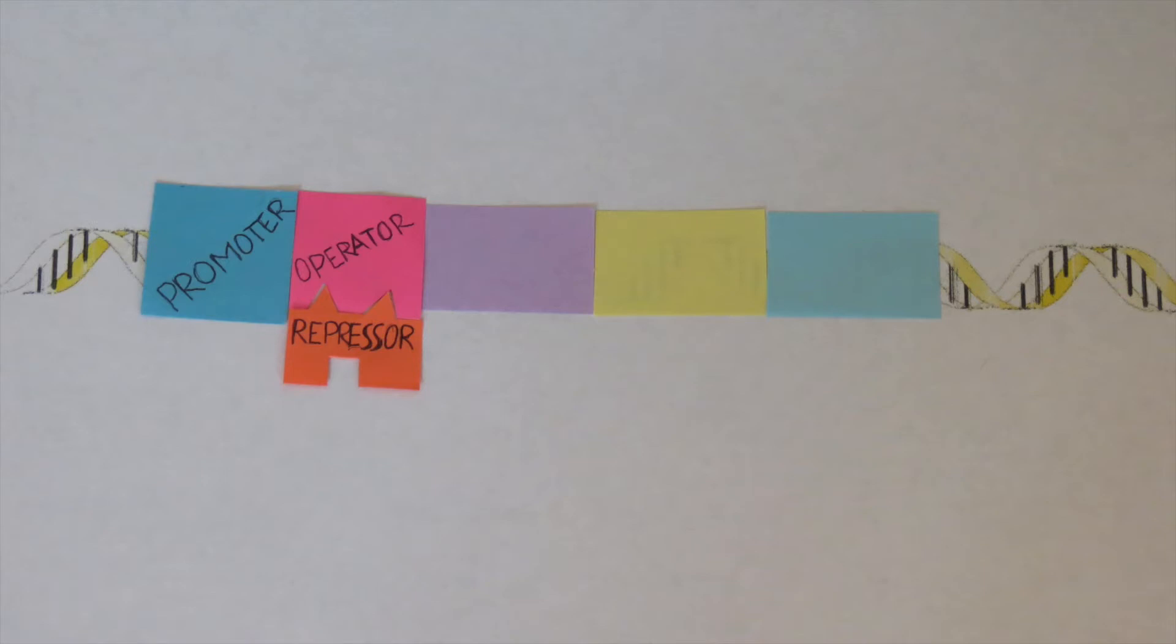The lac operon is an example of negative gene regulation because it has a repressor molecule that binds to the operator to stop transcription, while in positive gene regulation, an activator interacts with the RNA polymerase near the promoter to start transcription.